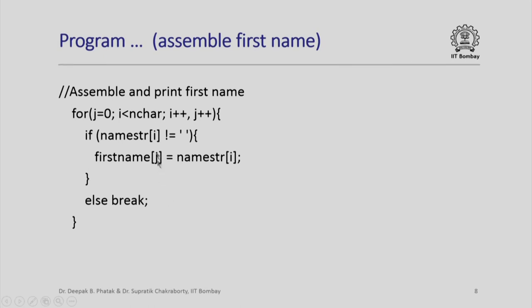We will now assemble and print the first name. Notice the iteration that we set up for this: for j equal to 0, i less than nchar, i plus plus, j plus plus. So what we are doing is while assembling the first name, we start with j equal to 0 which will be the index into the firstname array. This will be incremented by 1 as i will be incremented. Essentially what we are doing is we are going to stuff consecutive non-blank characters inside the firstname array.